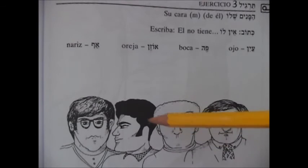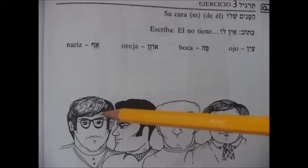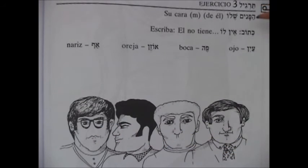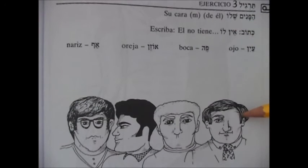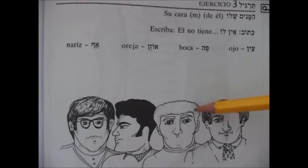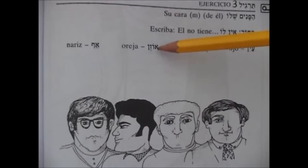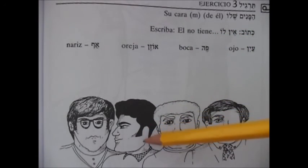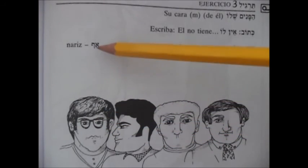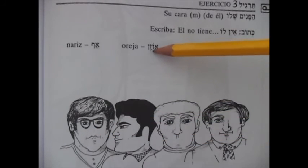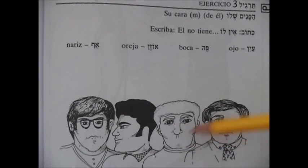Nuestro Targil Shalosh nos dice: Apanim Shelo — la cara de él. Ketob, Ein lo — escribe lo que él no tiene. El primero, a que verá rishón: Ein lo, Ein. El segundo, shení: Ein lo, Pe. El tercero: Ein lo, Ozen. El cuarto, a revir: Ein lo, Ozen. Y el cuarto: Ein lo, Af. Af, Af. Ozen, Pe, Ein.